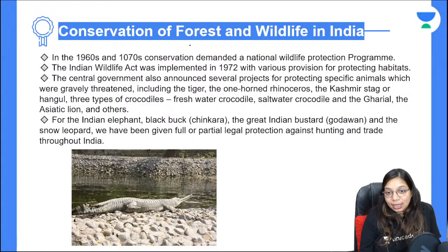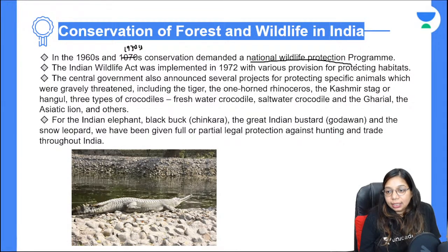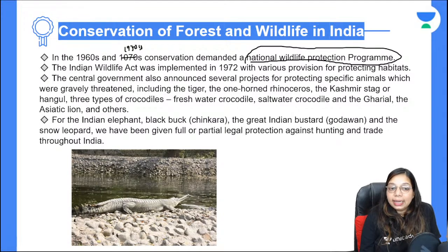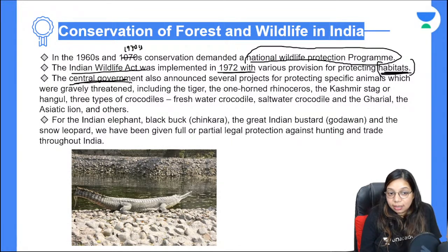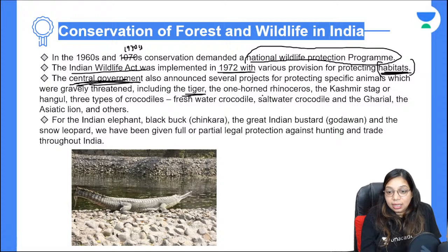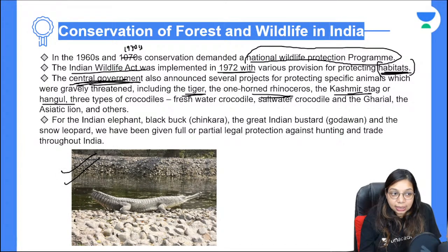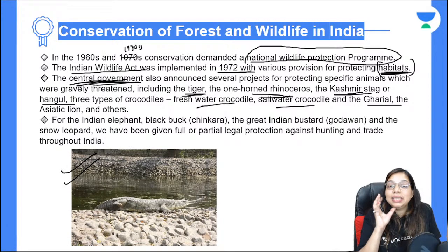For conservation, in the 1960s and 1970s, the National Wildlife Protection Act program was started. The Indian Wildlife Protection Act was passed in 1972. Its purpose was to protect wildlife habitats. The Central Government announced many projects to protect particular species — like Tiger, One Horn Rhinoceros, Kashmir Stag, Hangul, and three varieties of Crocodile.